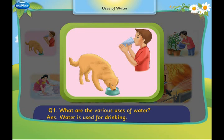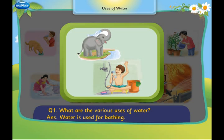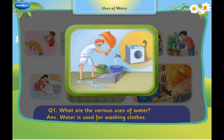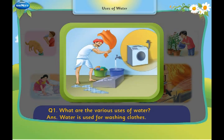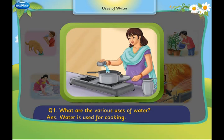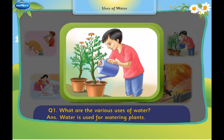Water is used for drinking. Water is used for bathing. Water is used for washing clothes. Water is used for cooking. Water is used for watering plants.